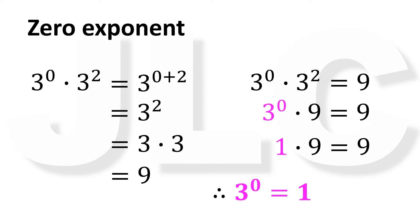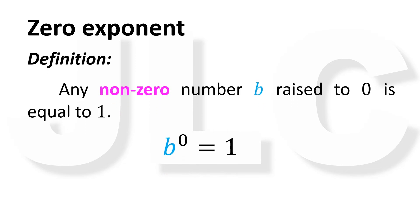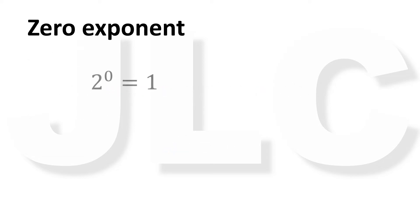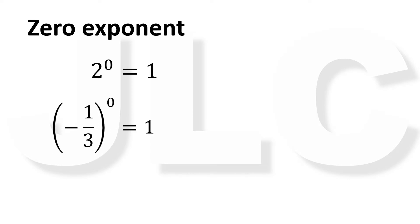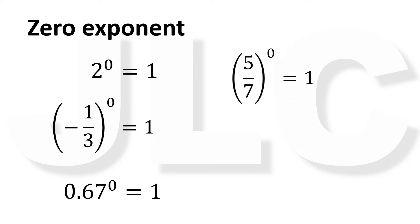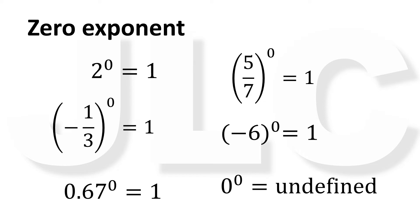This leads us to the following definition: any non-zero number raised to 0 is equal to 1. For example, 2 raised to 0 equals 1; negative 1 third raised to 0 equals 1; 0.67 raised to 0 equals 1; 5 over 7 raised to 0 equals 1; negative 6 raised to 0 equals 1. But take note that 0 raised to 0 is undefined.